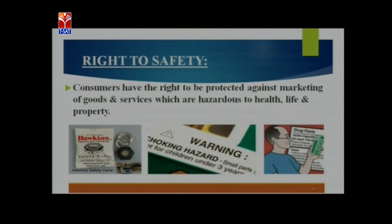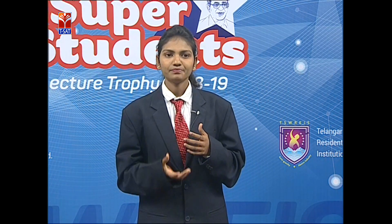The first right is the right to safety. The Consumer Protection Act provides the right to safety, meaning the consumer has a right to be protected against the marketing and selling of hazardous goods which are harmful to our health, life, and property. For example, some pharmaceutical industries produce defective or duplicated medicines which may cause harm to our life and health. So we have a right to be protected from hazardous goods.